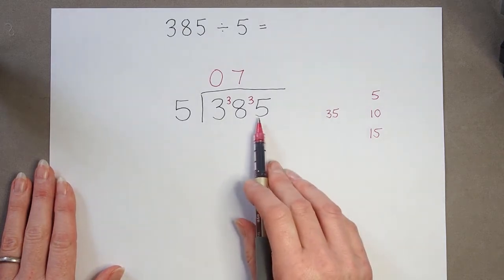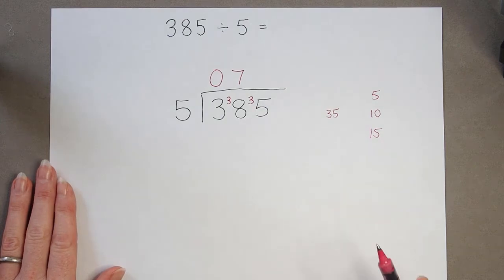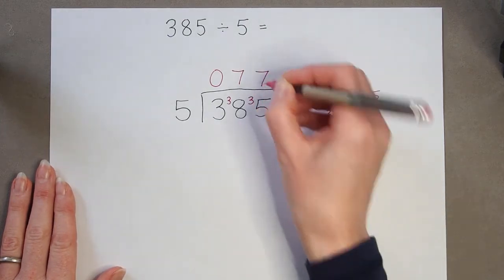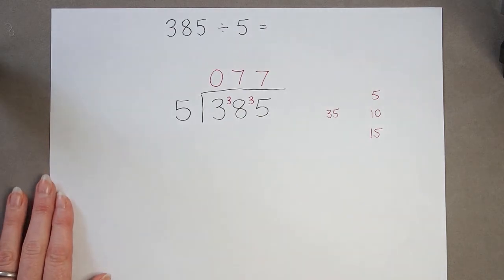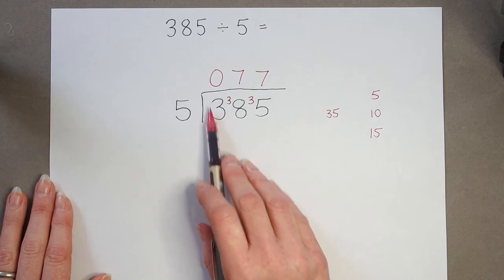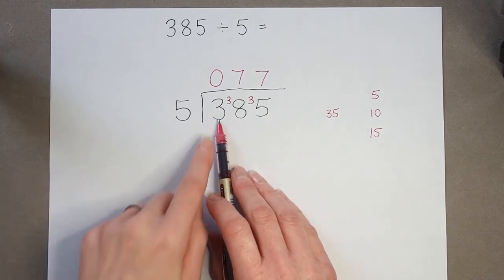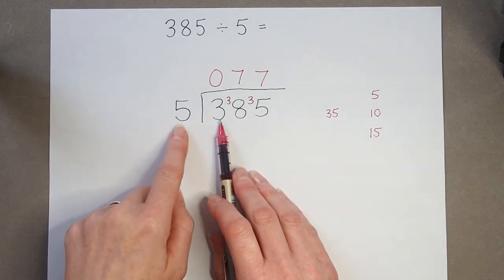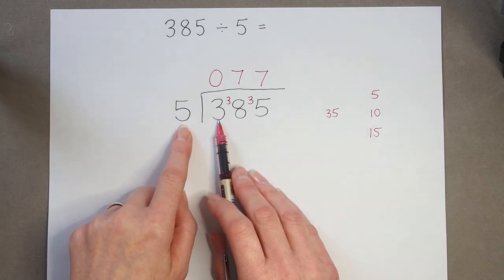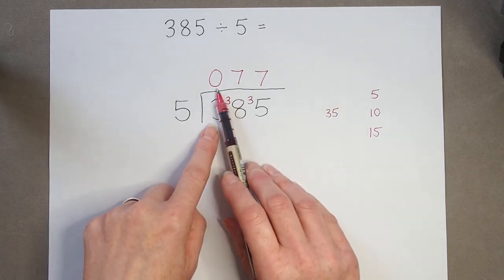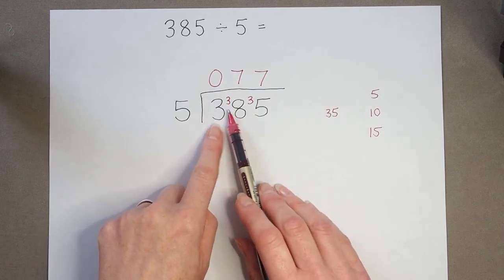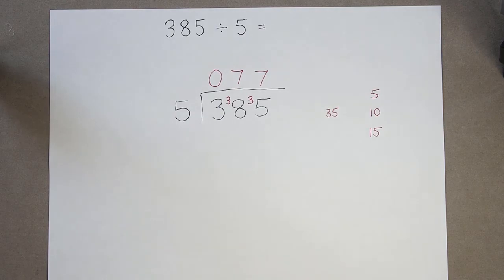And then how many 5s are there in 35? 35 divided by 5, I've already seen, is 7. So we just need to watch out when we've got a number where it's smaller, a digit here is smaller than the number that we're dividing by, because it's going to mean we have 0. And this number will then be the remainder, because we've not used any of them up.